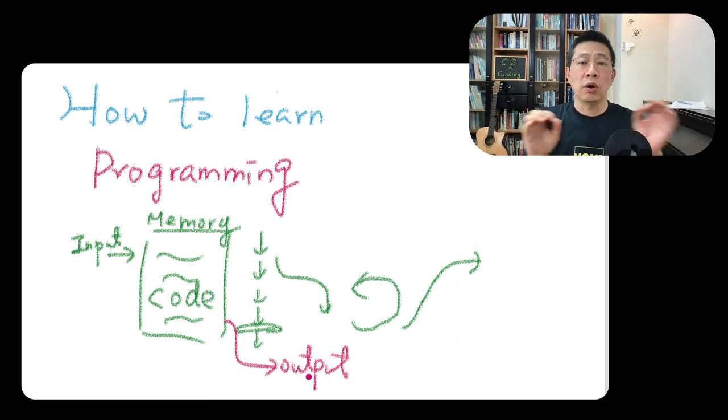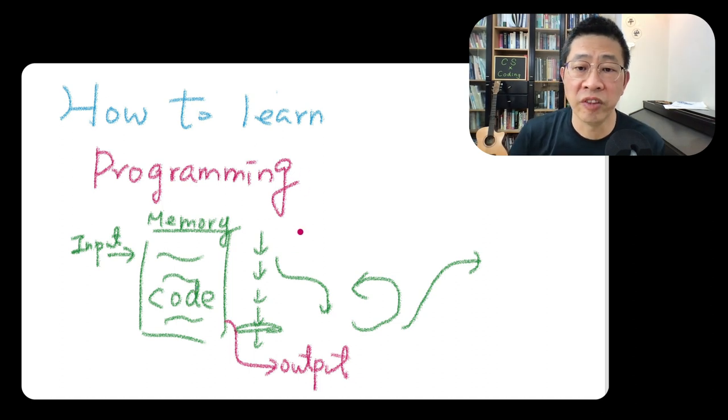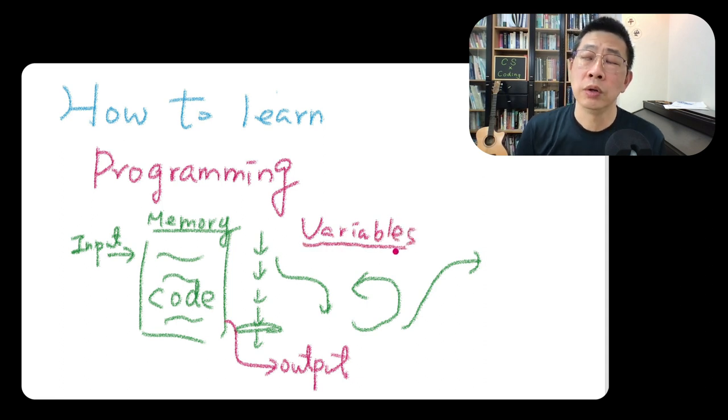And also some programming language will have some particular input. For example, input from the keyboard, input from the file, and may allow you to detect the mouse click like JavaScript, allow you to detect maybe the MIDI keyboard pressing, maybe in Sonic Pi. So all kinds of input normally from the external event. Also, we will have output.